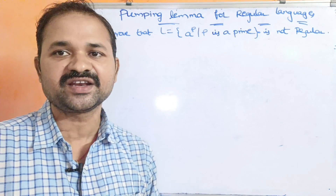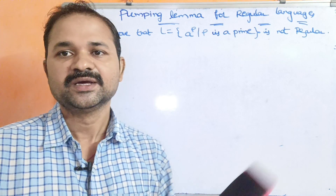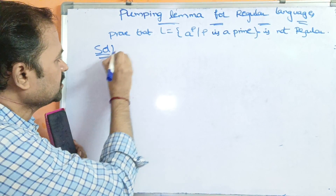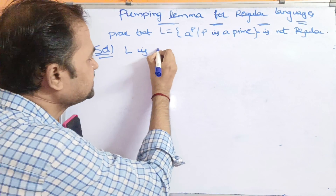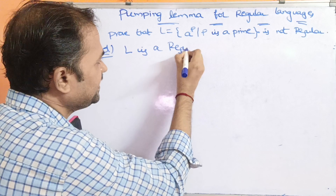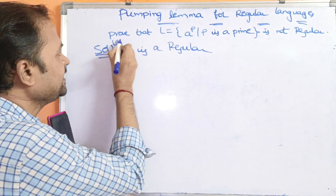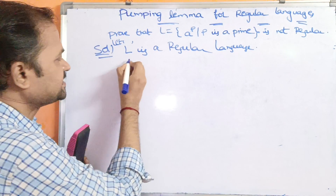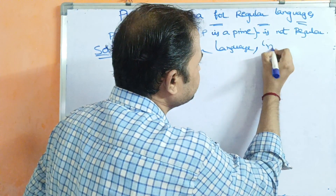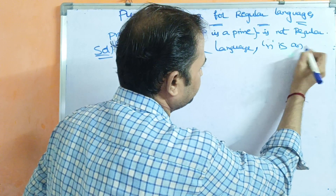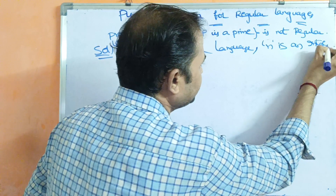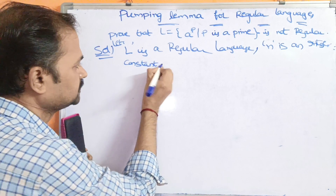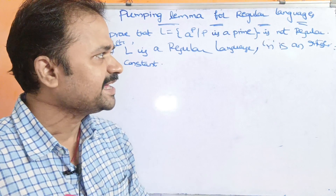So this is the language which is given: A power P such that P is a prime. Initially we have to assume L as a regular language. Let L be a regular language. N is an integer constant. So L is a regular language and N is an integer constant.